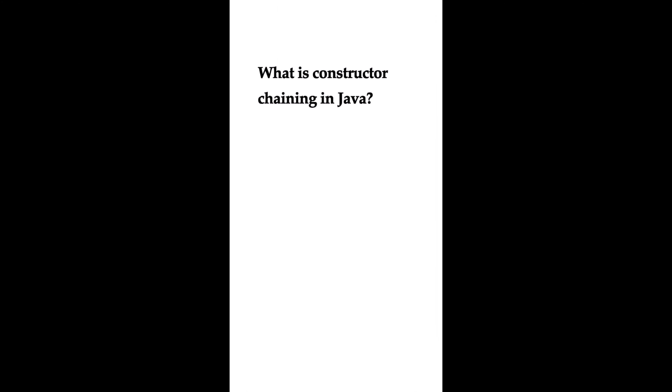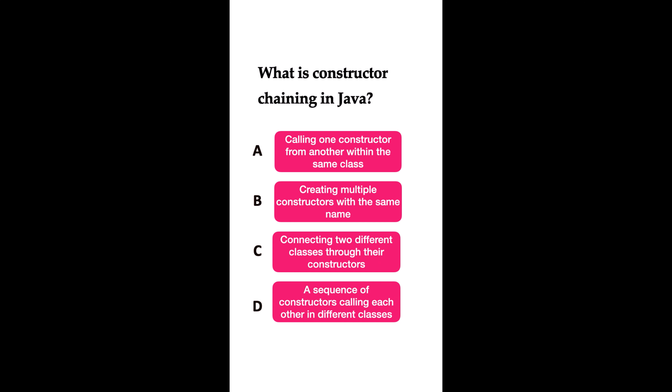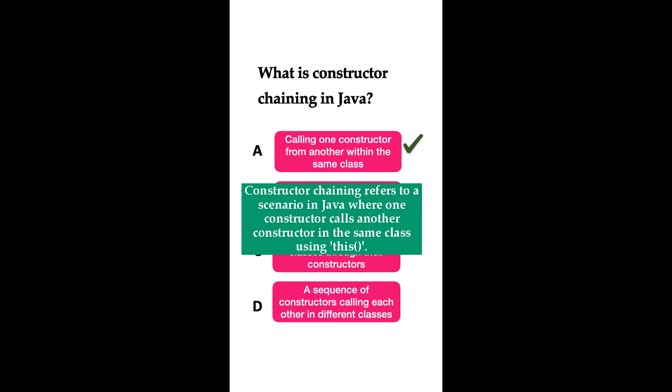What is constructor chaining in Java? Option A: calling one constructor from another within the same class. Option B: creating multiple constructors with the same name. Option C: connecting two different classes through their constructors. Option D: a sequence of constructors calling each other in different classes. The correct answer is option A. Constructor chaining refers to calling one constructor from another within the same class using the this() function. If you have multiple constructors and want to call one from another within the same class, you use this() as a function call.